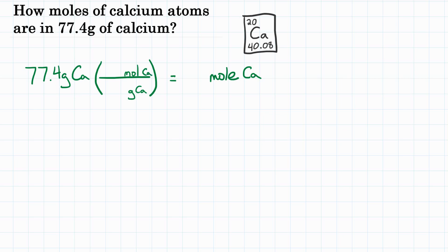Okay, so we have to know the relationship between grams and moles for calcium. We know that for every one mole of calcium, that is going to be 40.08 grams. And we get that number from our periodic table. Okay, one mole of calcium is 40.08 grams.